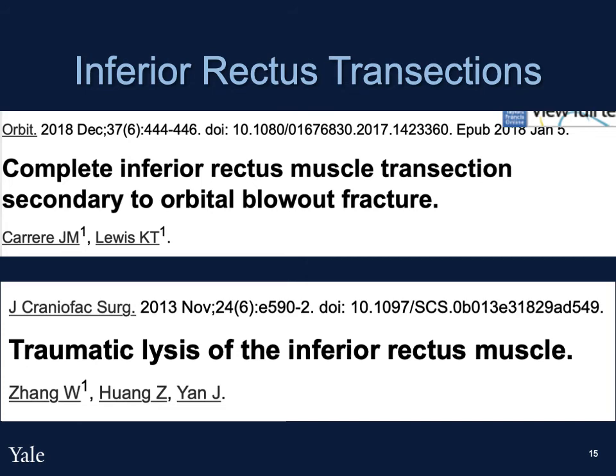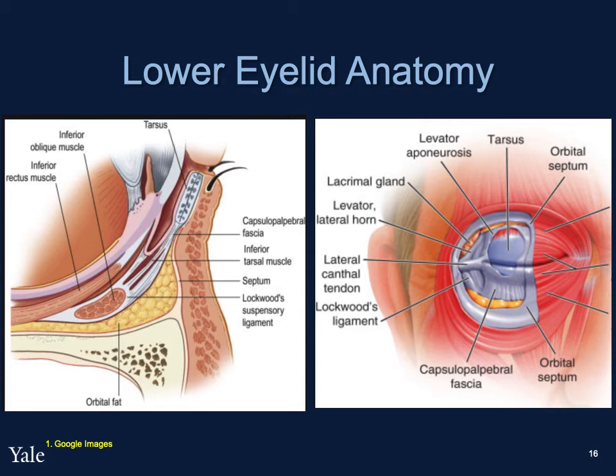For our patient, we believe that the lower eyelid anatomy and its relation to the inferior rectus played a role in what transpired. To review, the capsulopalpebral fascia starts from the inferior rectus muscle sheath, encircles the inferior oblique as it passes anteriorly, and then inserts into the inferior rectus. We hypothesize that our patient's inferior rectus transection may have been due to the pull of the lower eyelid during the trauma from the drill, which tore the capsulopalpebral fascia and the inferior rectus along with it.